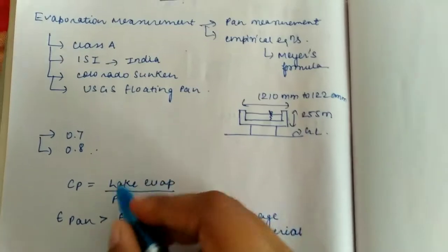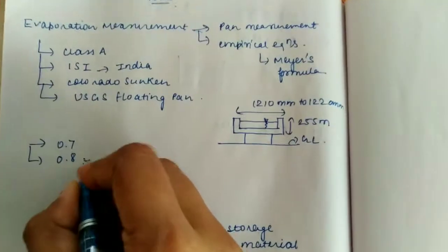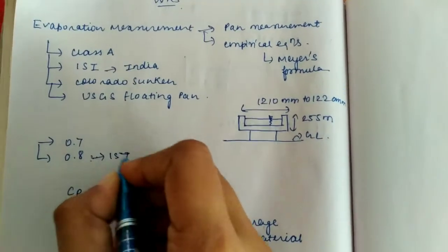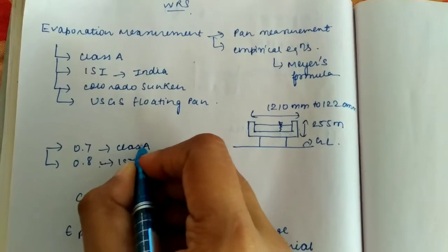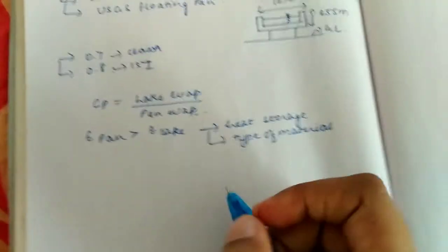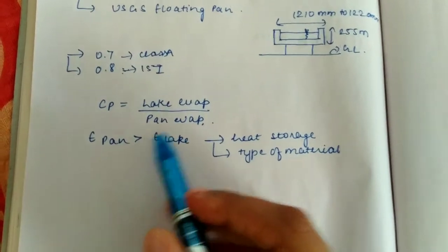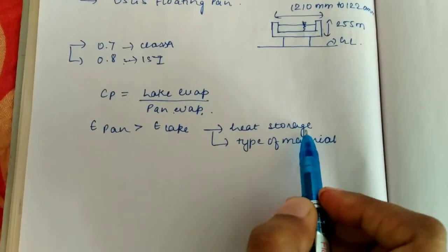less, that's why the overall ratio is more for ISI. This is for ISI, this is for Class A. This is nothing but pan coefficient. Why is this more? Because of the heat storage effect and the